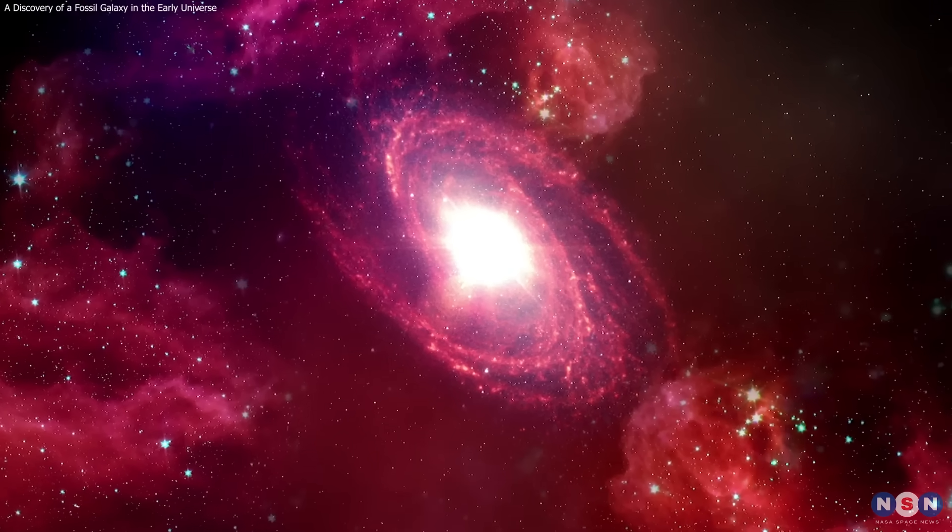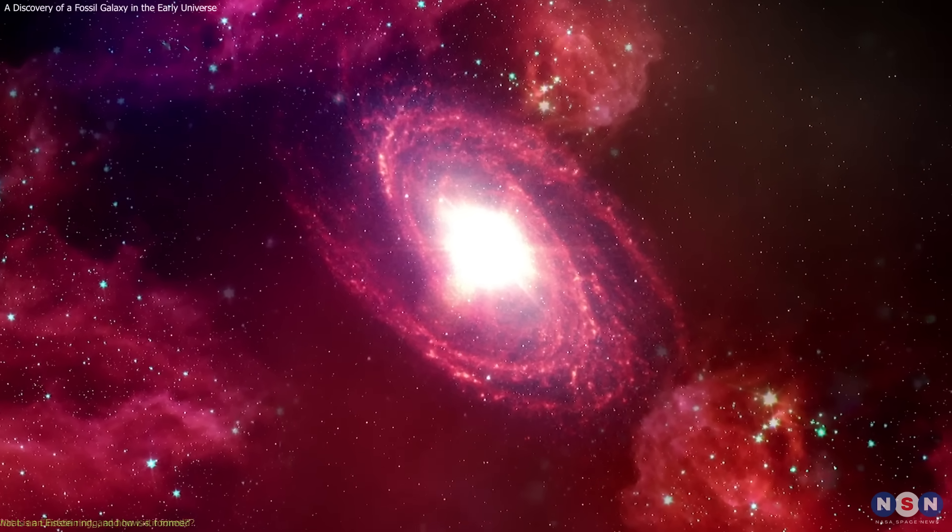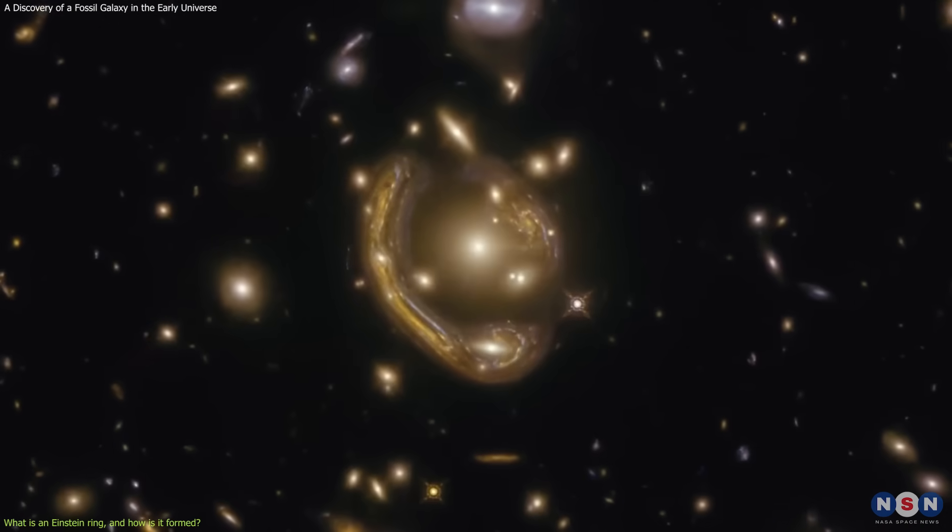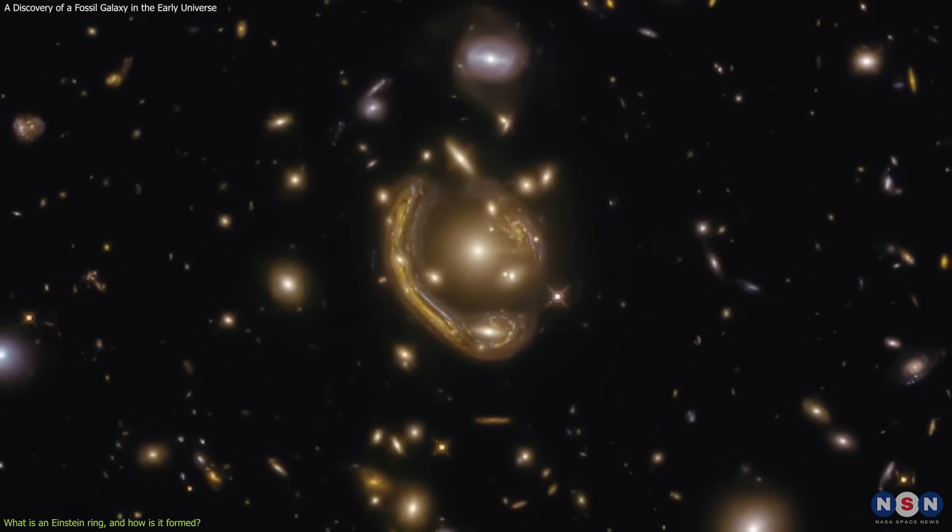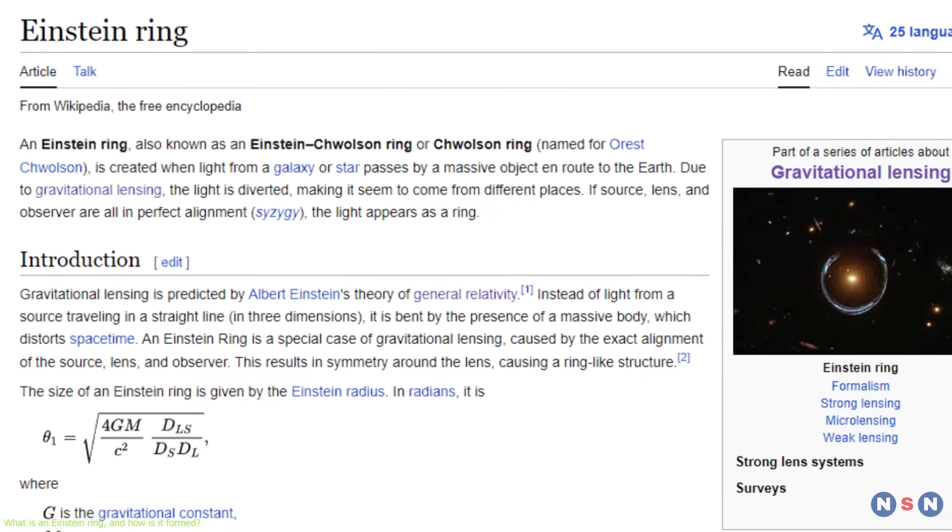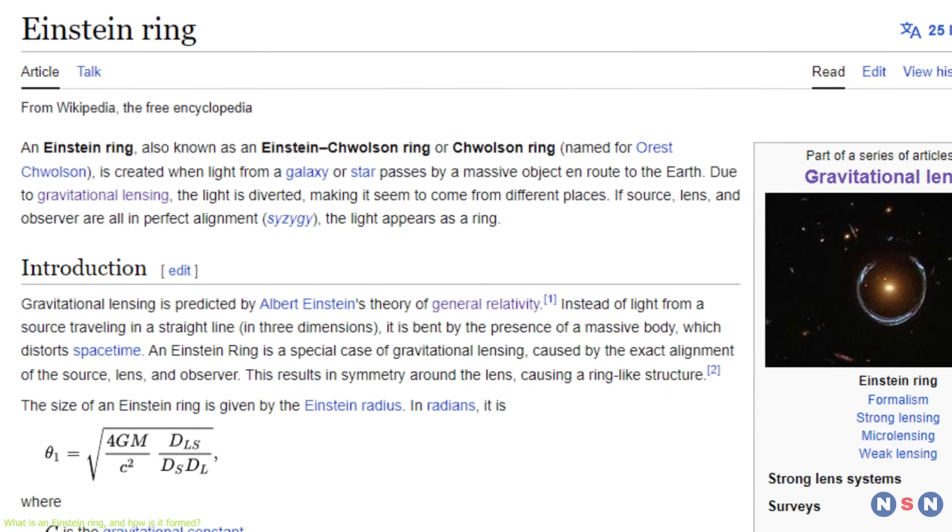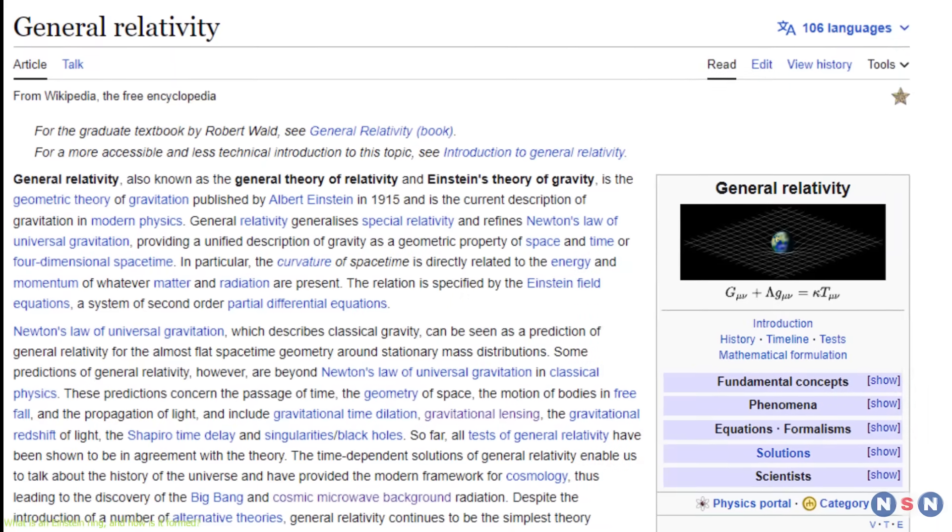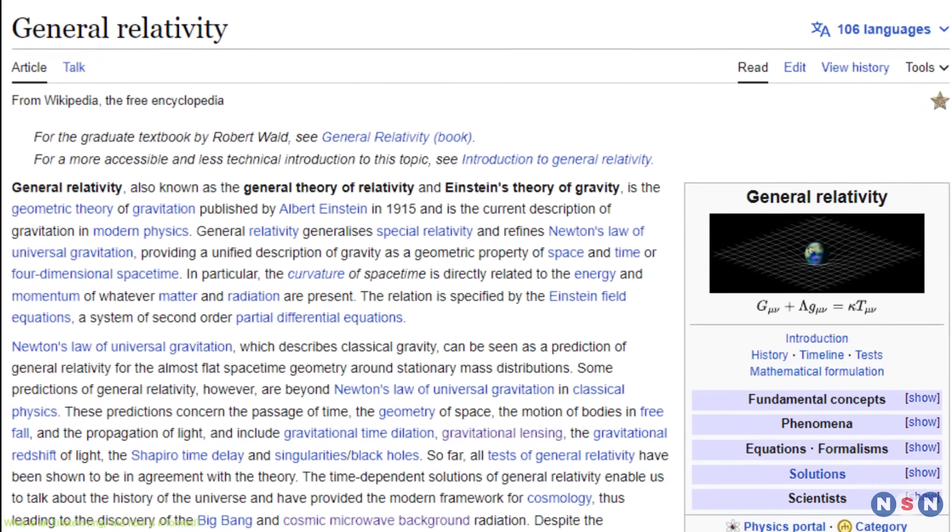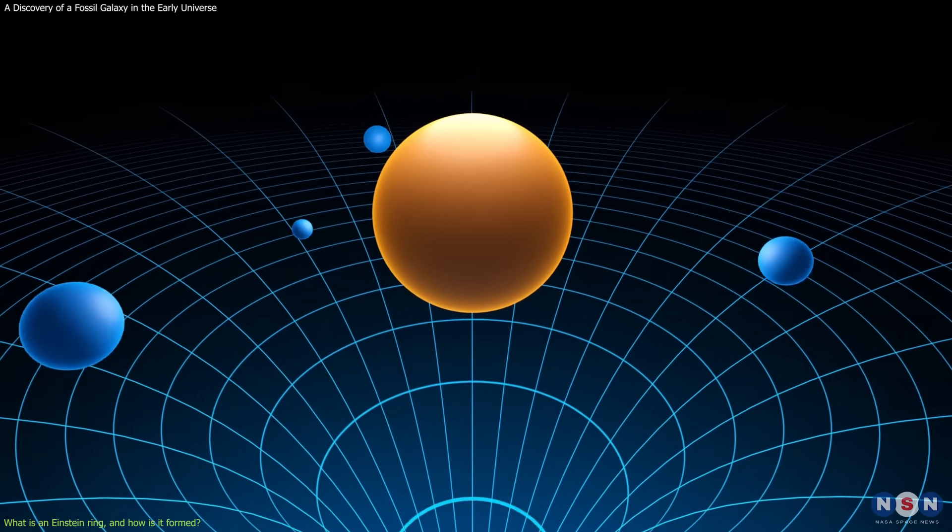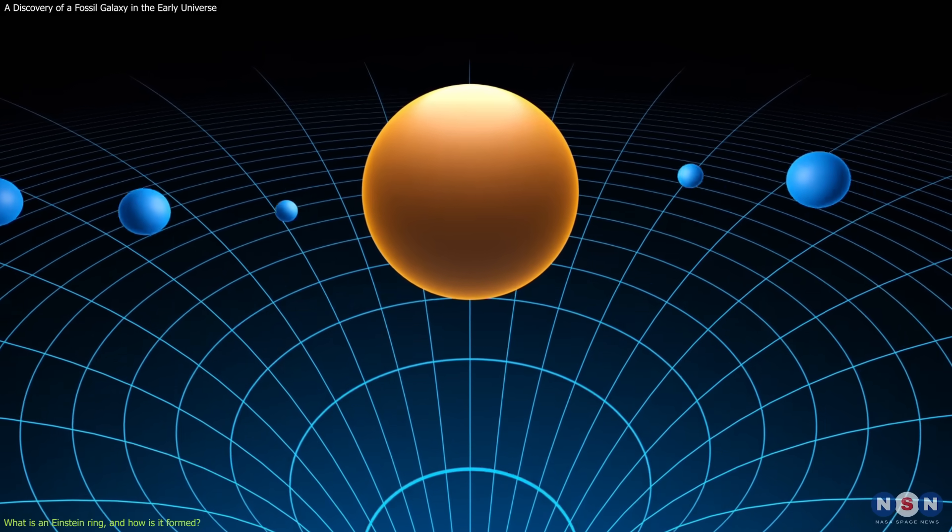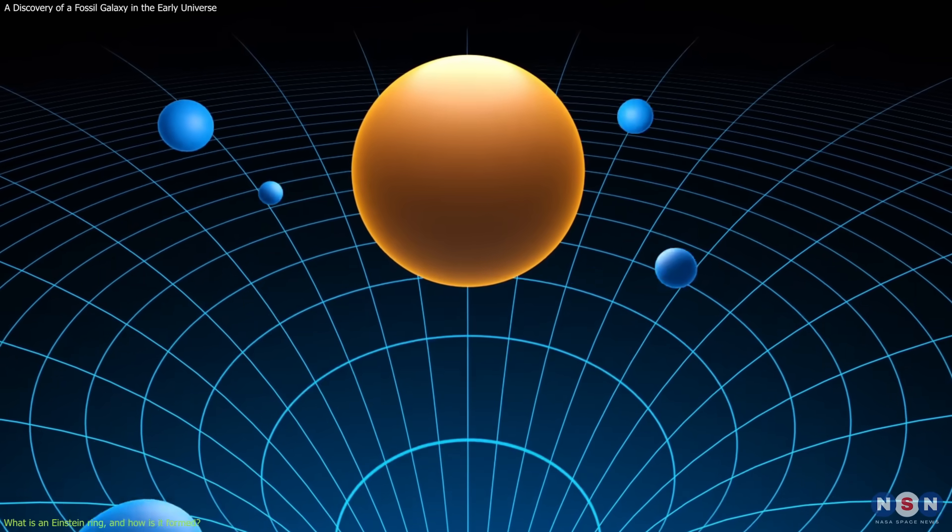Before we dive into the details of the massive and compact quiescent galaxy, let's first understand what an Einstein ring is and how it is formed. An Einstein ring is a special case of gravitational lensing, which is a phenomenon predicted by Einstein's general theory of relativity. According to this theory, gravity is not just a force, but a consequence of the curvature of space and time caused by the presence of mass.